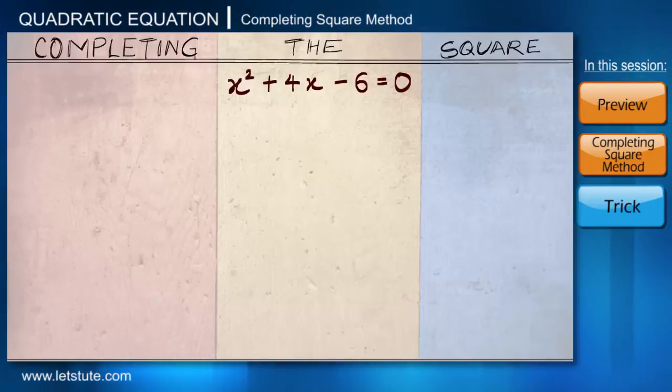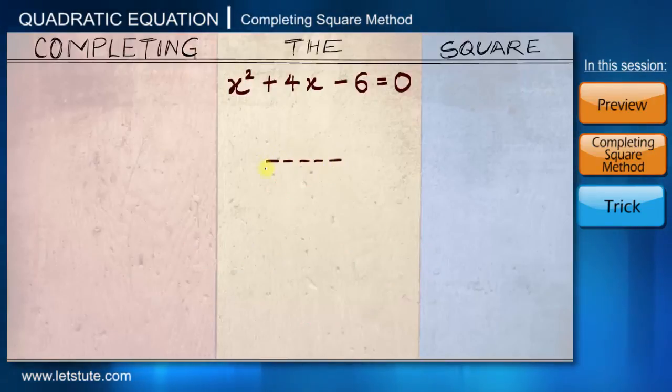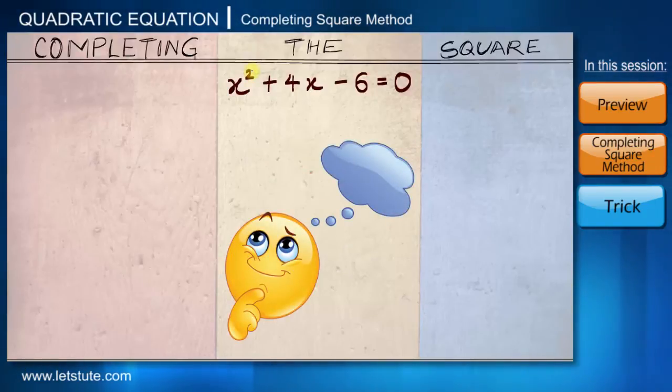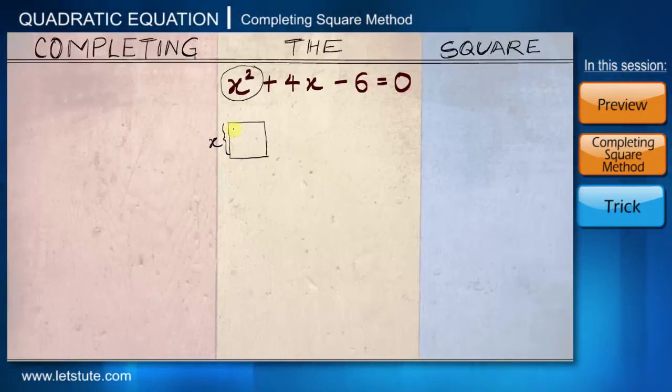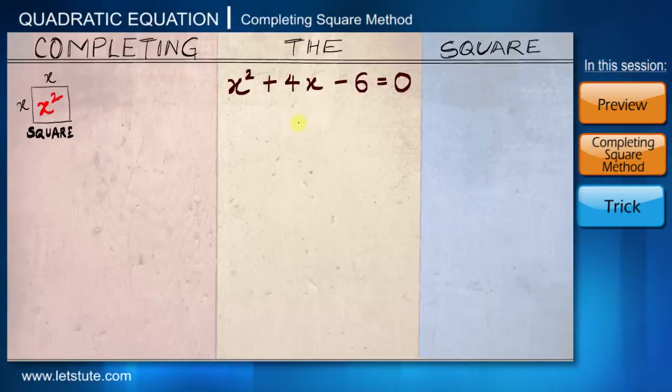It is different from factorization method in a way that we do not try to find any factors. Instead, as the name suggests, we literally try to complete a square. A square is a geometrical shape whose length and breadth are the same. We will be using a little bit of imagination when we solve this equation. So the first term that we see is x². I can visualize it like a geometrical shape whose length is x and breadth is x. When length and breadth of a geometrical shape are same, we call it a square. So x times x will give us x². So the first term x² is the area of a square whose length is x and breadth is x.